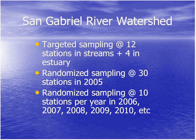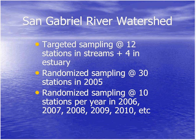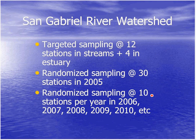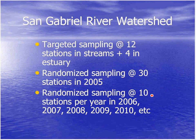In the San Gabriel River watershed, we had targeted sampling at 12 stations of interest plus down in the estuary. For randomized sampling, we did 30 stations in 2005, reaching our magic number right away and making a decent assessment. We also built in continuation of the program, doing randomized sampling at 10 stations every year — 2006, 2007, and on. By now, we're up to 70 or 80 stations, giving us a very good dataset for assessing overall watershed condition and for tracking whether conditions are getting better or worse over time.